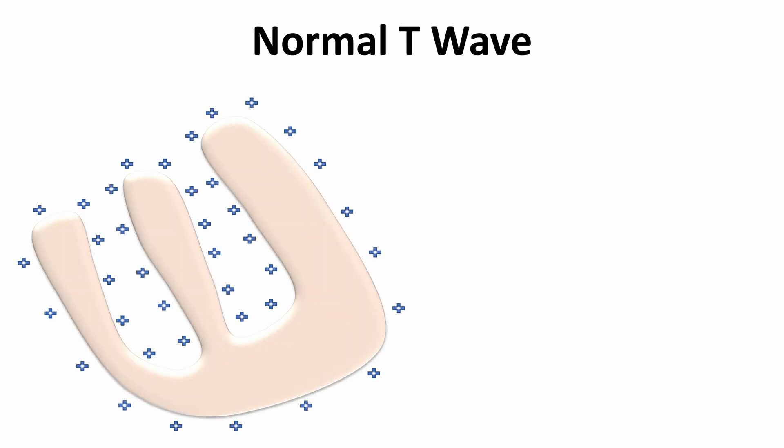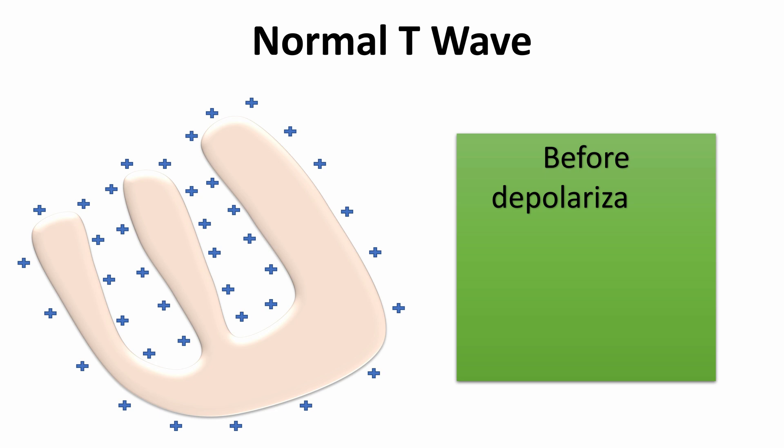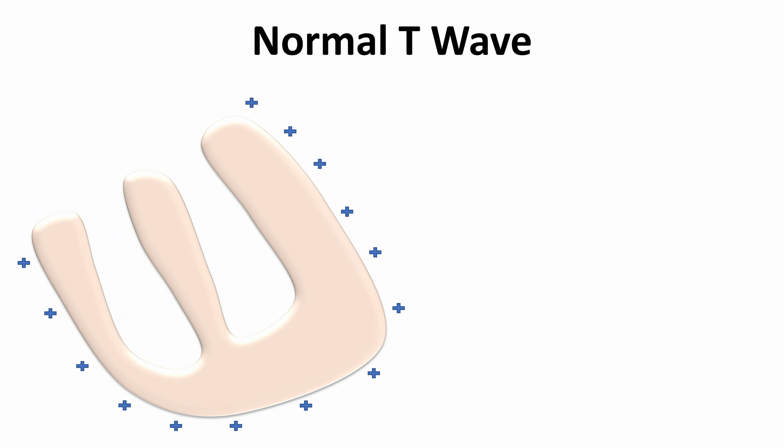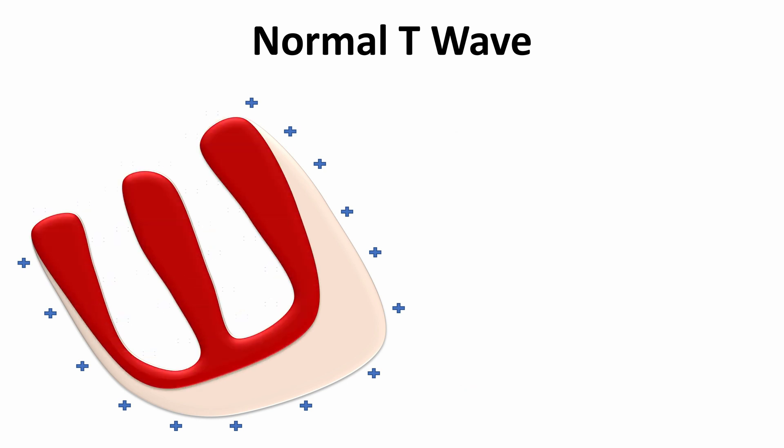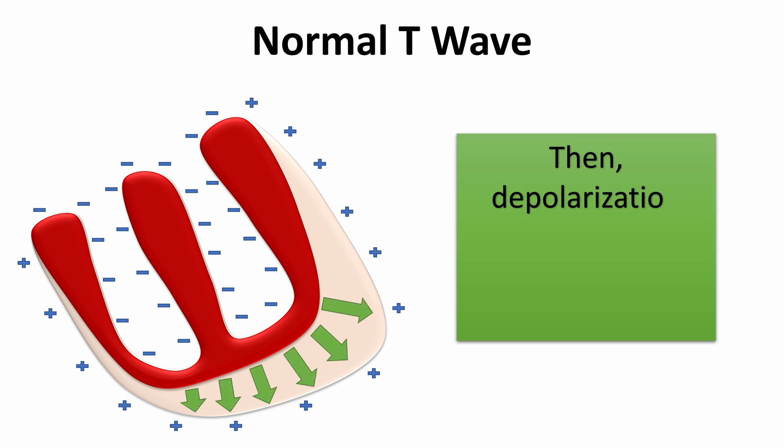Before depolarization, the outer surface is positively charged in relation to the inner surface. Then, depolarization starts from inner surface to outer surface when depolarization ends.